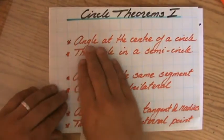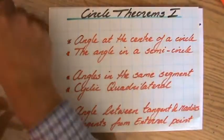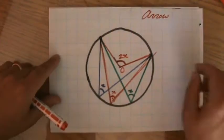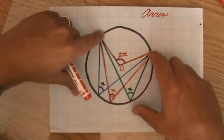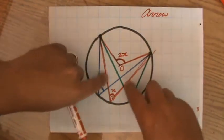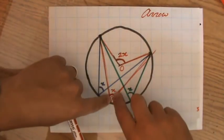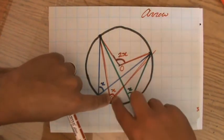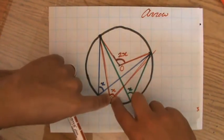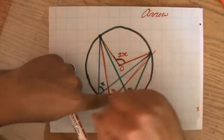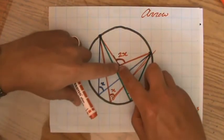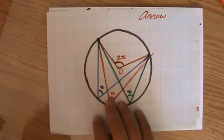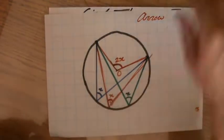Circle theorems: we have angles at the center of a circle, which is the arrow you're looking for. You have a radius and a radius, and they meet somewhere on the circumference, and that angle is half the size of the angle at the center. It's important to realize that that is at the center of the circle.